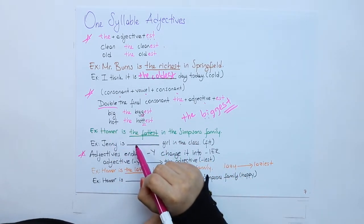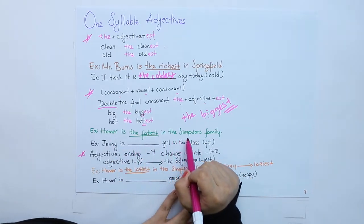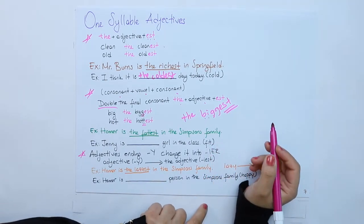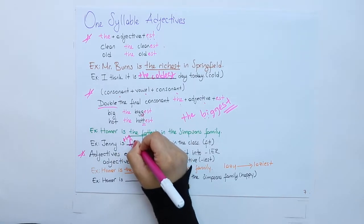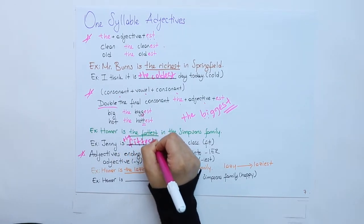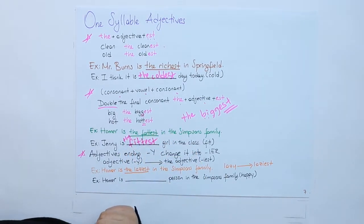Homer is the fattest in the Simpsons family. Jenny is the fittest girl in the class.